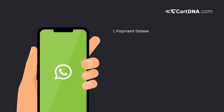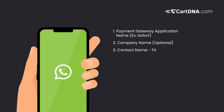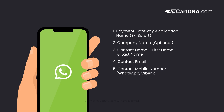Send the following details via WhatsApp: 1. Payment gateway application name (e.g., SoFort). 2. Company name (optional) and email. 3. Contact name (first name and last name). 4. Contact email. 5. Contact mobile number (WhatsApp, Viber, or Telegram). 6. Shopify URL. 7. Billing address. Thank you for watching.